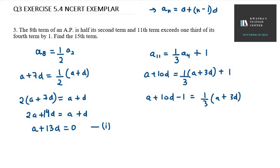Now you have to bring this 3 to the left-hand side, so it will be thrice of A plus 10D minus 1 equal A plus 3D. It will be 3A plus 30D minus 3 equal A plus 3D.